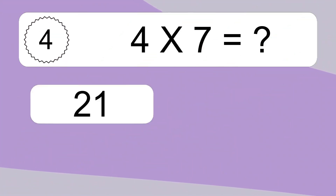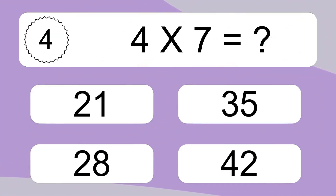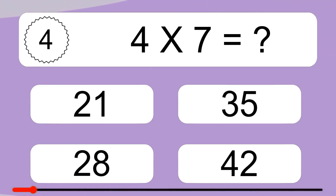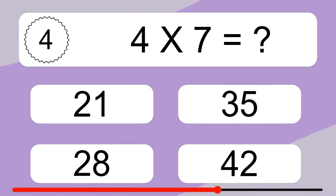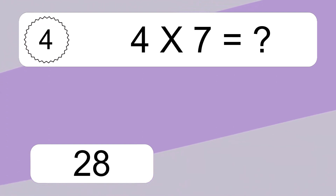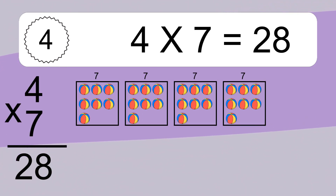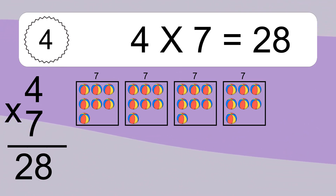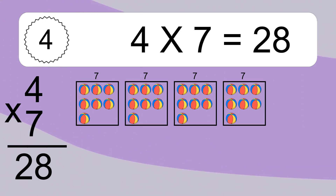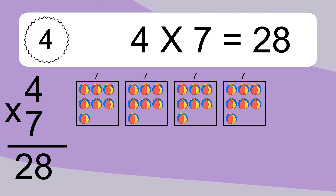4 times 7 equals what? 4 times 7 equals 28. We have 4 boxes, and each box has 7 colorful balls inside. If you count all the balls in all the boxes together, you will have 4 times 7 balls. This equals 28 balls.